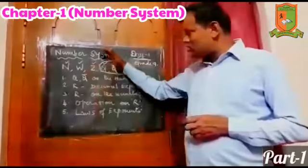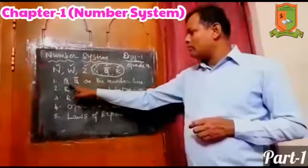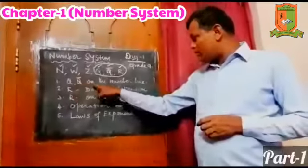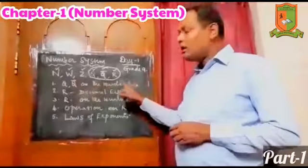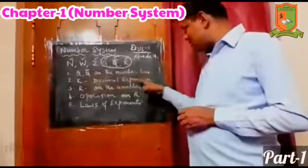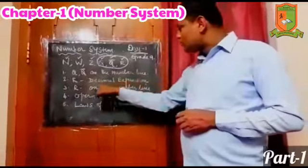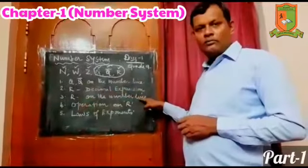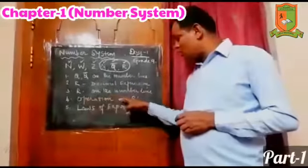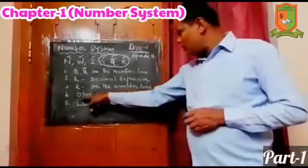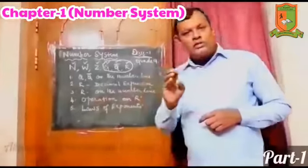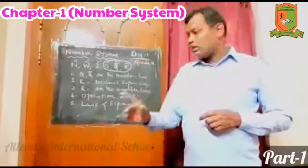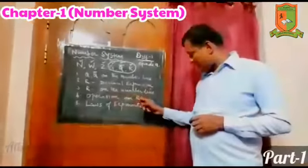In this chapter we will see the following: rational and irrational numbers on the number line, real numbers as a decimal expansion, real numbers on the number line, and operations on real numbers. Operations are addition, subtraction, multiplication, and division of real numbers.